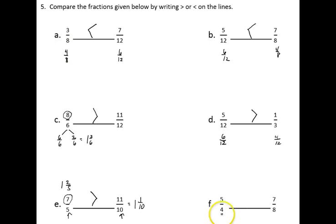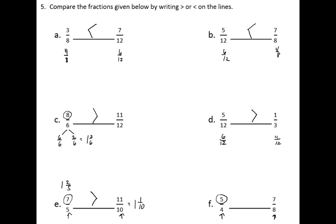And one more question. Again, I have an improper fraction here. 5 fourths tells me that this fraction is greater than 1 whole. 7 eighths means that that fraction is less than 1 whole. So 5 fourths is greater than 7 eighths.